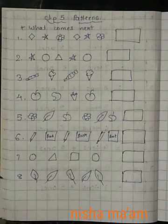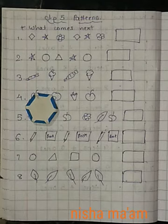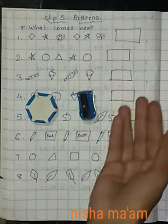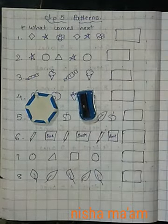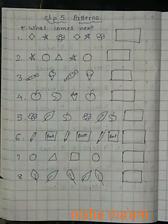फिर, Circle, Circle, Square, उसके बाद क्या आएगा? Yes, Circle. इस तरह से हम क्या करते हैं? Patterns करते हैं.